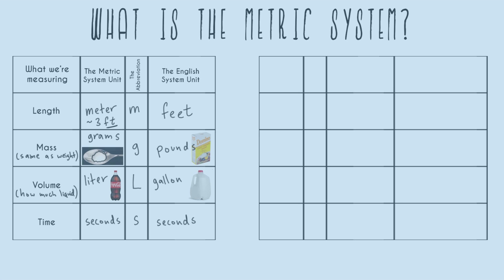Now we need to go over prefixes — this is where the metric system is conceptually different from the English system. Prefixes are things that go before the metric system units. The first prefix is kilo, abbreviated as a lowercase k. What each prefix does is give you a ratio telling you what the prefix means compared to the base unit. One kilo means a thousand base units of anything.